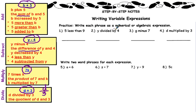So, practice. Write each phrase as a numerical or algebraic expression. 5 less than 9, that would be 5 minus 9. y divided by 4, write that lots of different ways. g minus 7, that would be g minus 7. d multiplied by 3, write d times 3. But the way that you need to start looking at it is 3d. The constant always has to come first and the variable second.